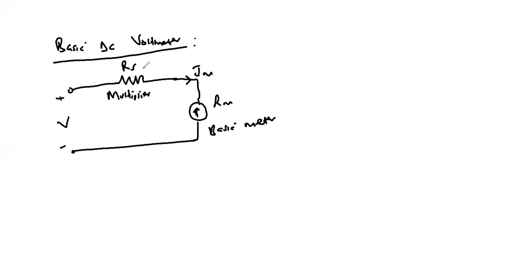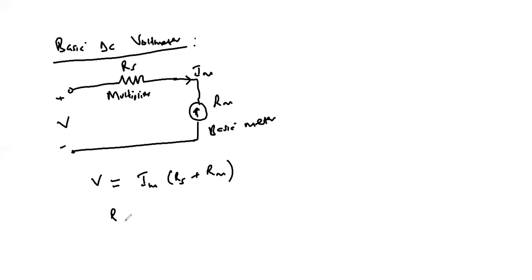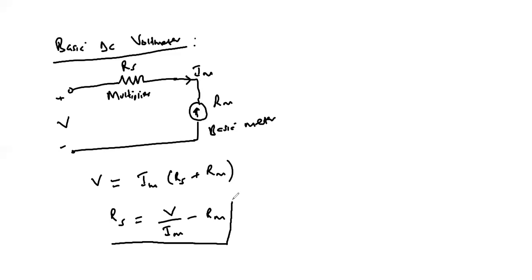We use the series resistance to limit the amount of current that flows through the basic meter so that it does not exceed the full scale deflection current. From our circuit, the voltage source equals the drop across the series resistance plus the drop across the internal resistance of the basic meter: V = I_m × (R_s + R_m). Making R_s the subject: R_s = V/I_m − R_m.